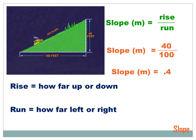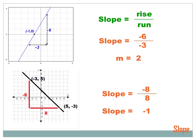Now let's figure out the slope of a line on a coordinate plane. The formula is still rise over run. Here's a line, and what you need to do is find two points on that line. It's much easier if you pick points where the line runs through the intersection of two grid lines. You can see where those grid lines cross — let's start at one of those points.